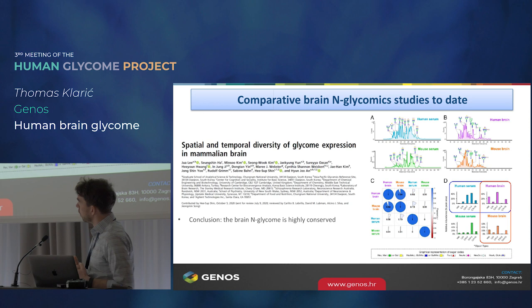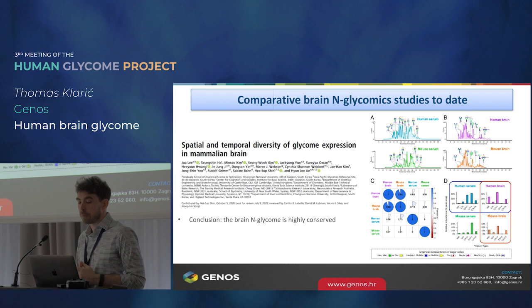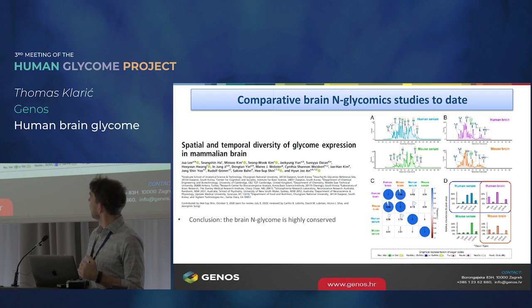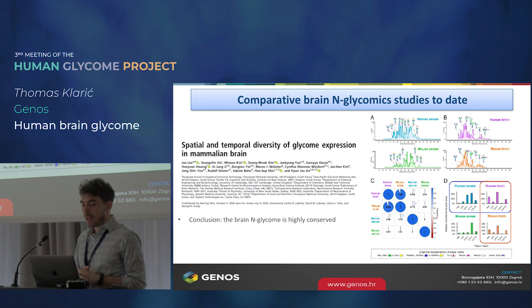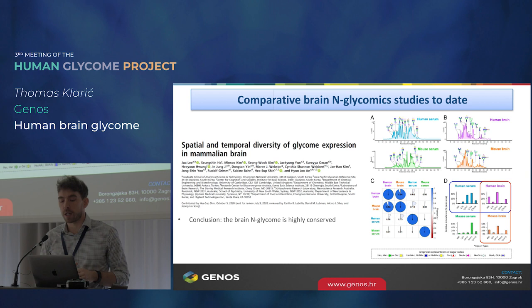Let's review the published literature — and it won't take very long, because there's really been only one meaningful comparative brain N-glycomics study published so far. It was a very important study, the first of its kind, but the conclusions were a little underwhelming: they basically concluded that the brain N-glycome is highly conserved. They compared the mouse and the human brain, which is true, but we felt there's more to this story and that some things could have been done differently to flesh out the details. So we've tried to address those things in our study.